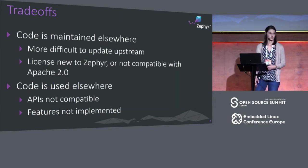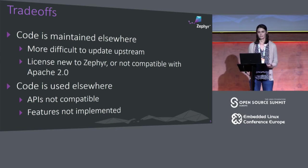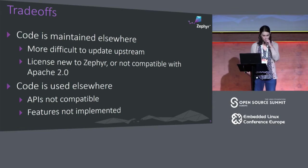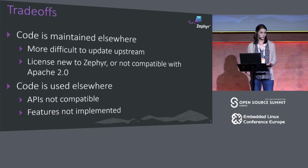Naturally, when you pull in something like this, there are trade-offs. Having code maintained elsewhere — if the vendor finds a bug, updates are already made by the vendor. But if we find at the project level that there's a bug, it's quite a bit more difficult to go and update those things upstream.